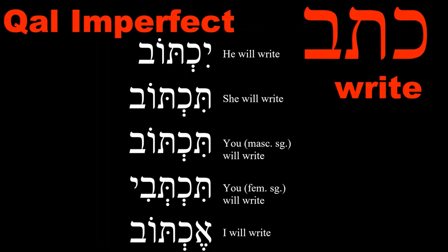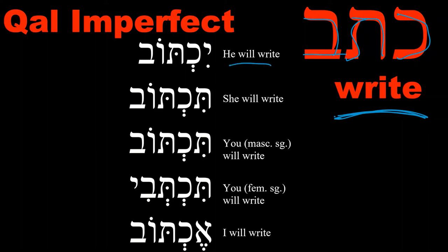We want to use the word 'to write' — that's going to be our action. The Hebrew verbal root, the three-letter verbal root, of course, is kaf, tav, bet. And that's right. If we want to say 'he will write,' we would say yiktov.